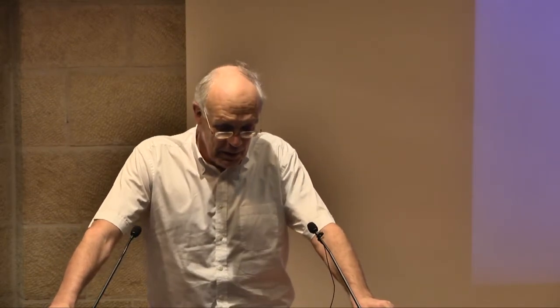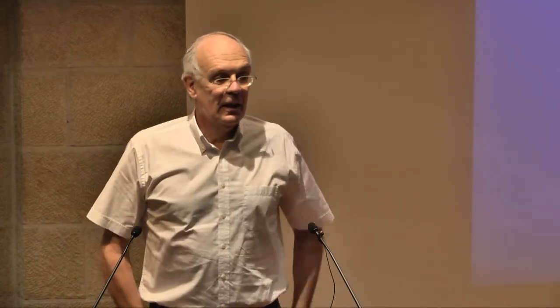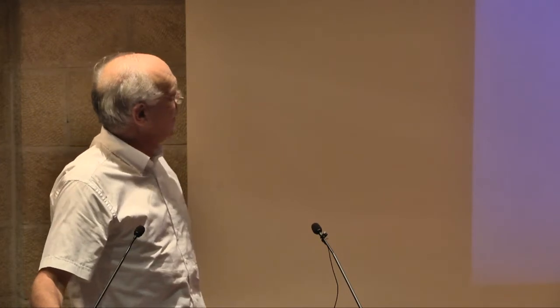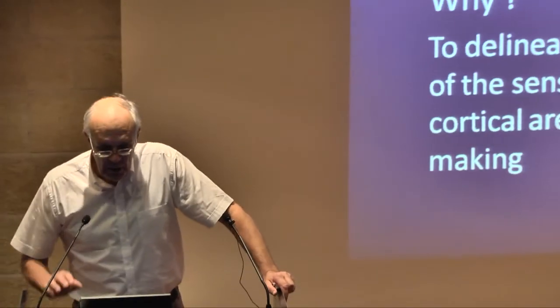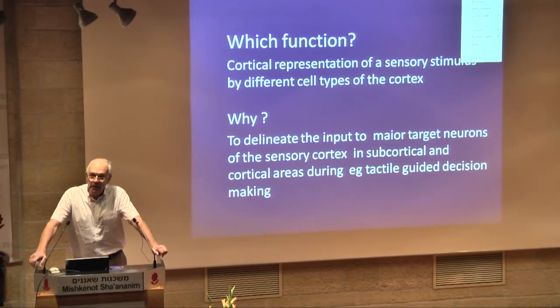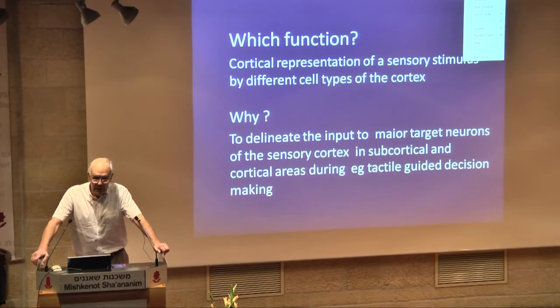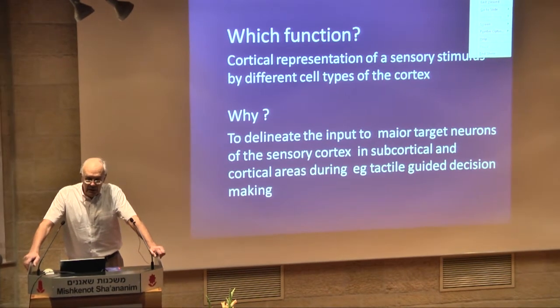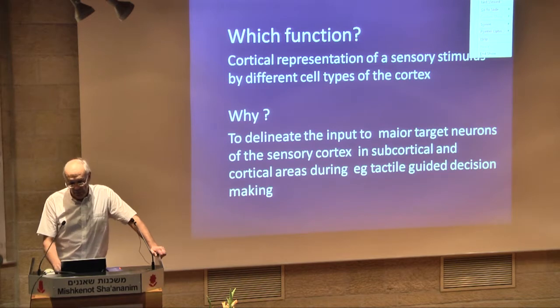The original title was somewhat different, and it had two words which I think should be more popular in the future in brain research: anatomy and numbers. I put this as sort of a provocative title. What I'm really going to talk about is what can we learn about brain functions from anatomical circuitry constructions in silico. Why do you want to do this? The cortical representation of a sensory stimulus by different cell types in the cortex is essential if you want to know how a sensory stimulus is transmitted to other parts to guide behavior, for example, tactile-guided decision-making. This was the starting point of this effort to do anatomy.